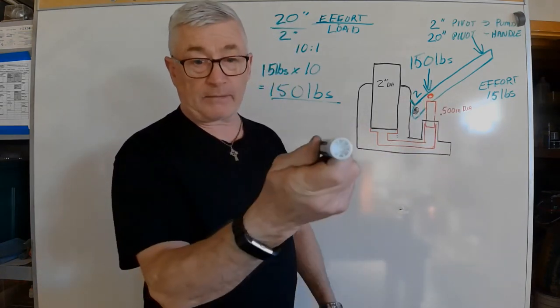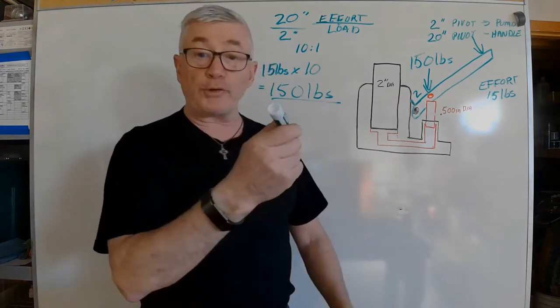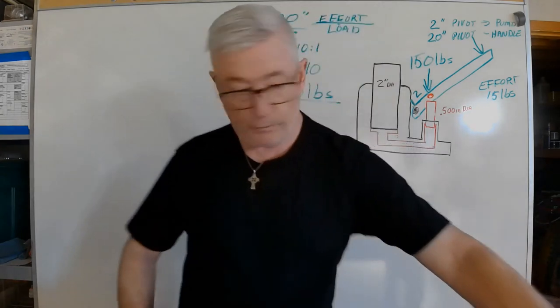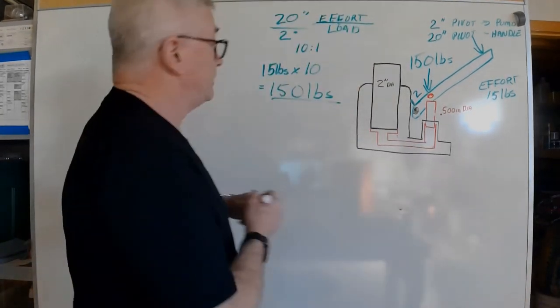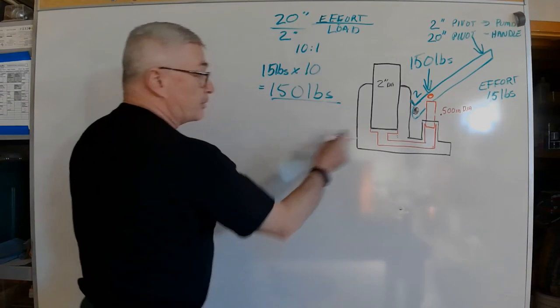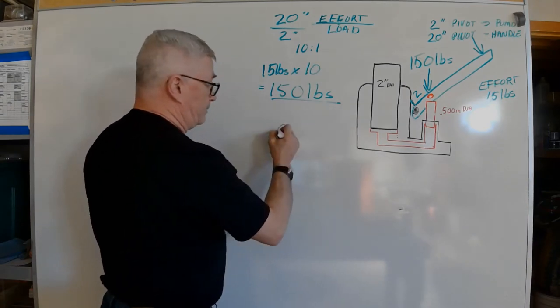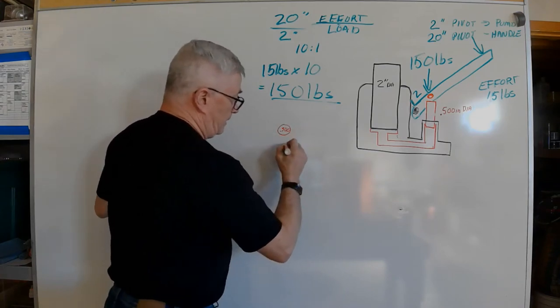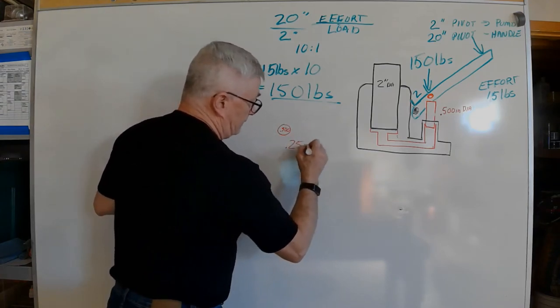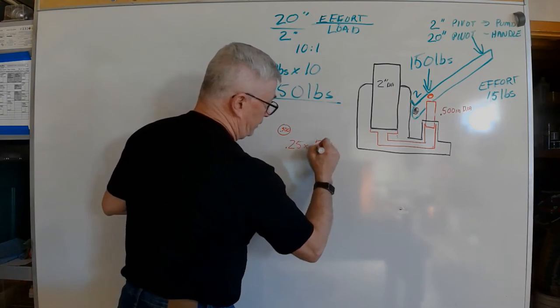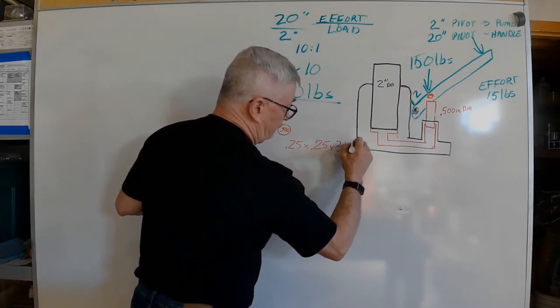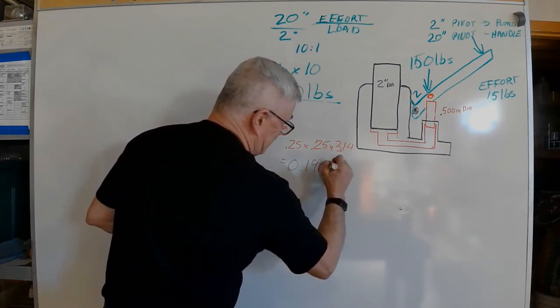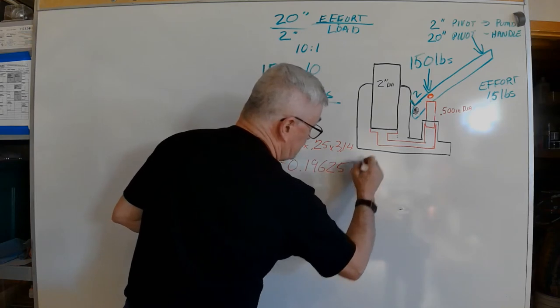That pump is a round pump very similar to my marker, so we are going to calculate the area of that pump. It is half an inch in diameter. So using our formula: 0.25 times 0.25 times 3.14 equals 0.19625 inches squared.